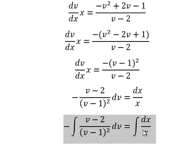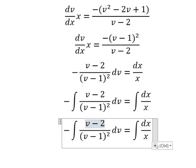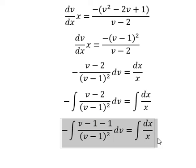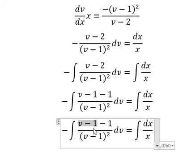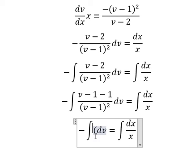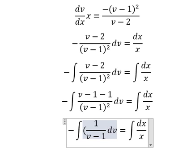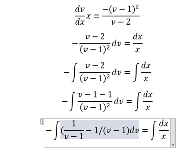Next, we can separate the numerator into negative 1. So v minus 1 divided by v minus 1. So you will get 1 over v minus 1 minus 1 over v minus 1 squared.